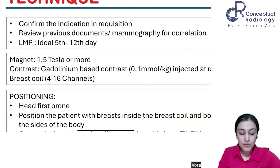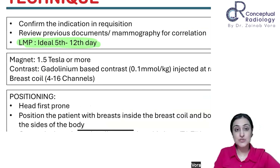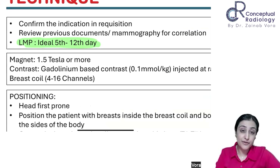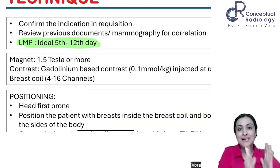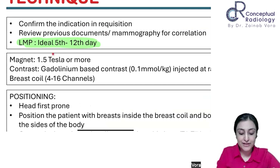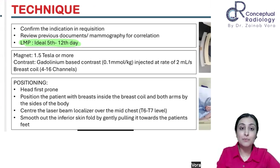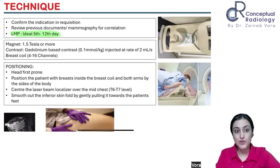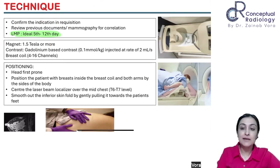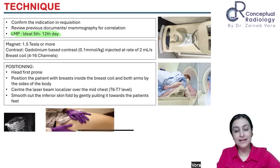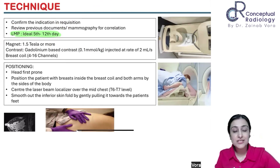Ideally we want to do breast MRI on day 5 to 12 of the menstrual cycle — the early follicular phase. This is when fibroglandular parenchyma is at a minimum because it proliferates under the influence of progesterone. This is the phase where progesterone is at its lowest, contributing to minimum background parenchymal enhancement. That is why this is the preferred timing.